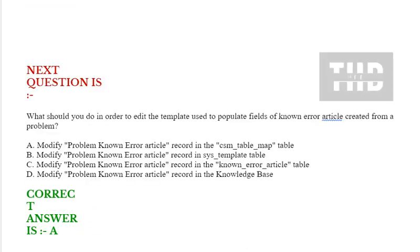Next question: What should you do in order to edit the template used to populate fields of a known error article created from a problem? Option A: Modify problem known error article record in the csm-table-map table. Option B: Modify problem known error article record in the sys-template table. Option C: Modify problem known error article record in the known-error-article table. Option D: Modify problem non-error article record in the knowledge base. Correct answer is option C.